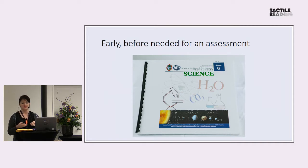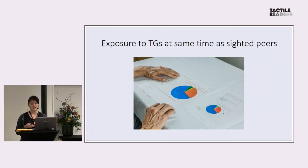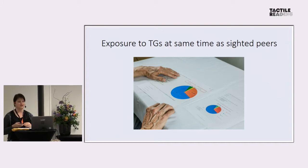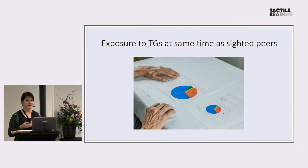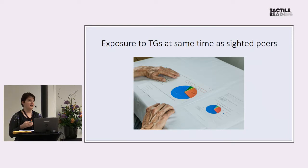We really need to get tactile graphics into kids' hands early — before they're needed for an assessment. Tactile graphics need to be introduced at the same time as sighted peers are receiving visual information, so that by the time blind or visually impaired students reach an assessment, they already know how to gain information from a tactile graphic. Then you can actually assess whether they know the answer to the question, not whether they even know what the question is.